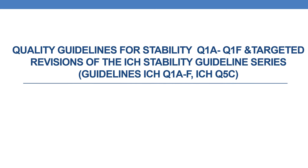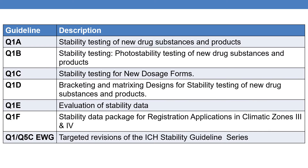In the current session, in addition to the Q1A to Q1F guidelines, we will be discussing the targeted revisions of the ICH stability guideline series, which mainly targets the ICH Q1 and ICH Q5C guidelines. As we have discussed earlier, Q1 mainly deals with stability and the Q1 guideline is further subdivided into Q1A to Q1F.